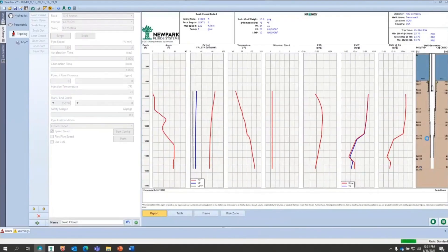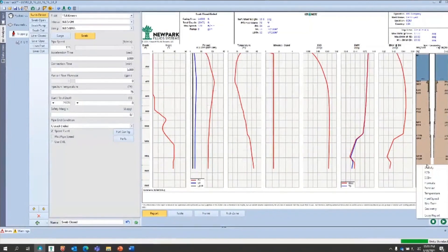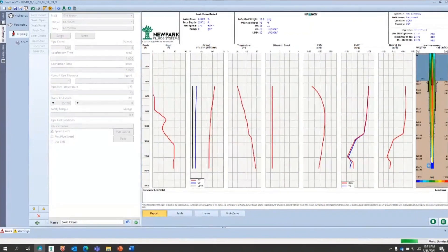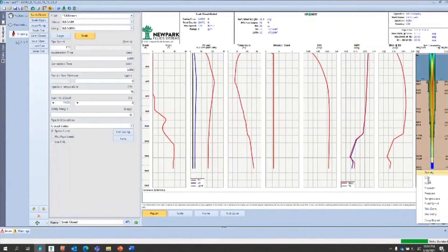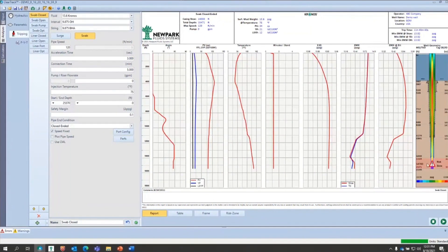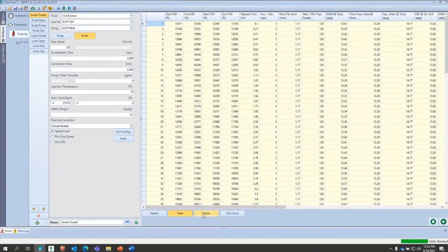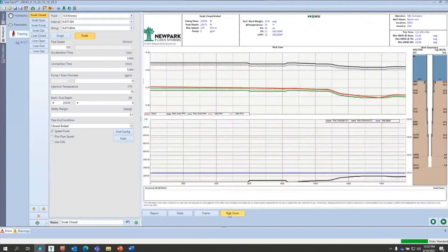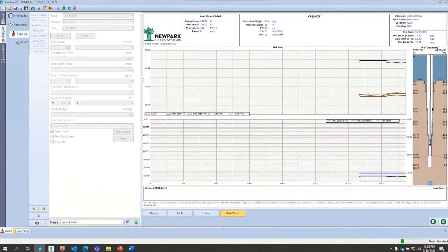One other feature of the software is surge and swab modeling, which is a key part of any drilling operation. Any drilling operation, you're going to either trip to change a bit or change a failed tool, or just you're done drilling that section, it's time to run casing or run a liner. You're either pulling the hole too fast that can create its own challenges of being below the pore pressure or running in the hole too fast and exceeding the surge pressure, exceeding the frag radius.